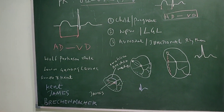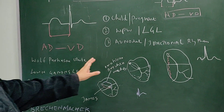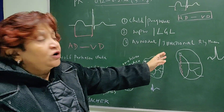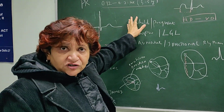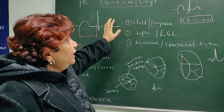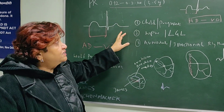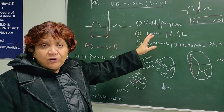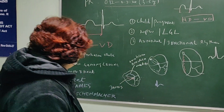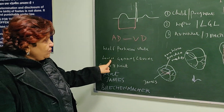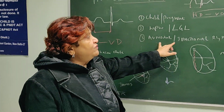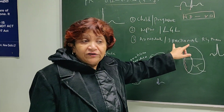The third cause is AV nodal or junctional rhythm. So these are the causes of short PR interval: it could be a normal physiological enhancement such as in children and pregnancy; it could be because of accessory pathways such as WPW and LGL syndrome; and it could be because of junctional rhythm.